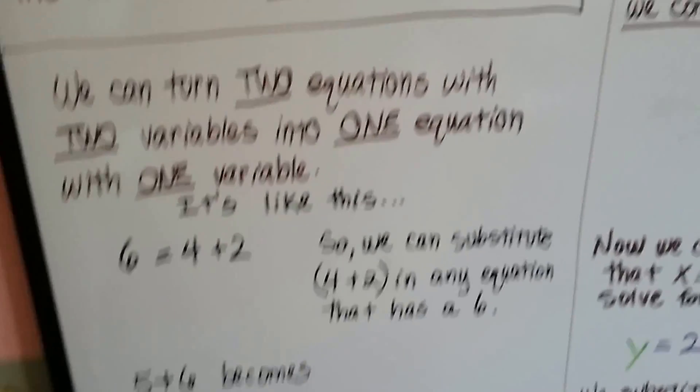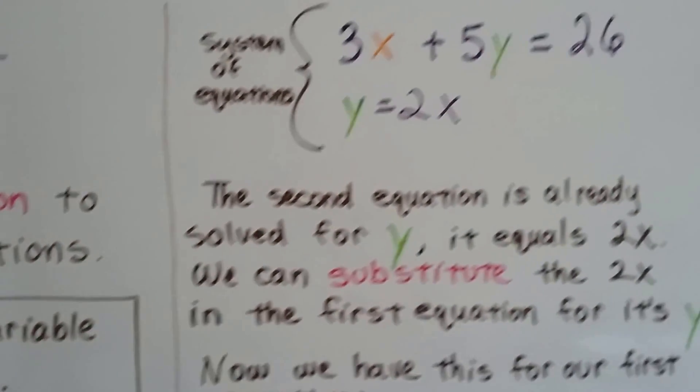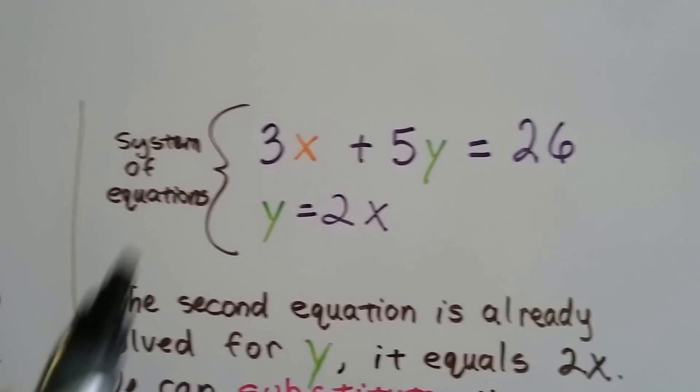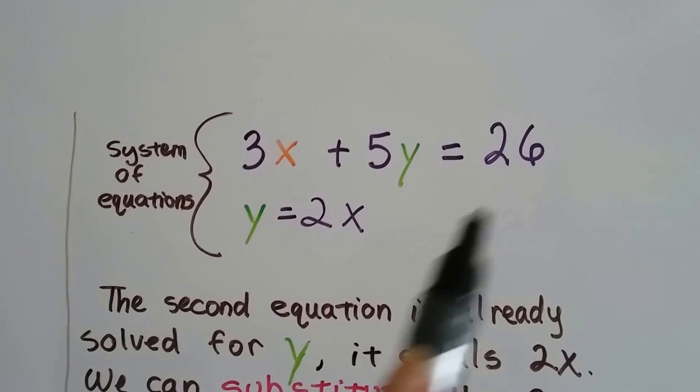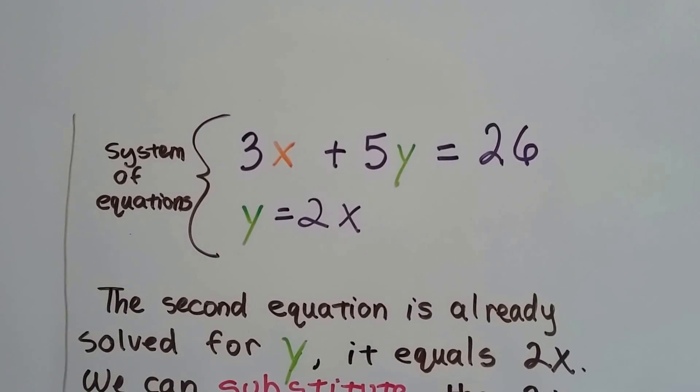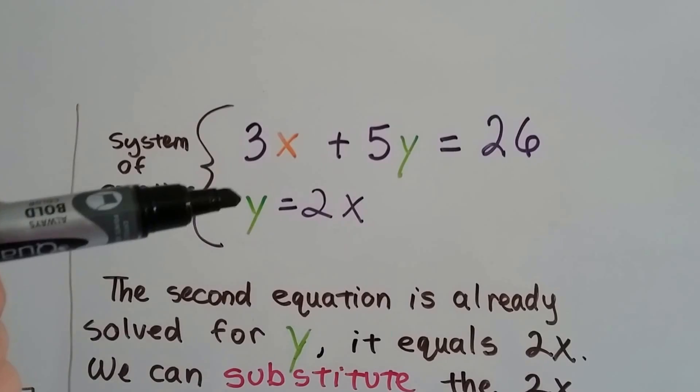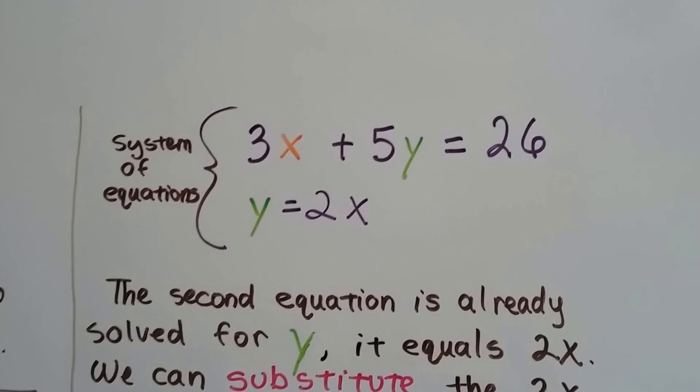I'm going to do the same thing with the x and the y. So here's our system of equations. We've got 3x plus 5y equals 26 for one equation, and we've got y equals 2x for the other one. Now guess what?